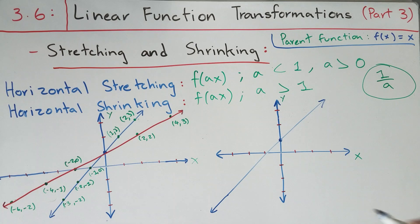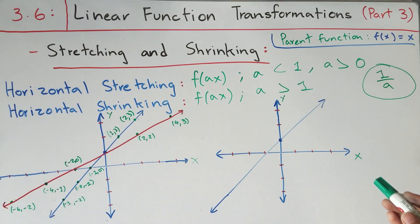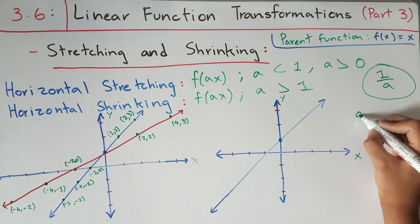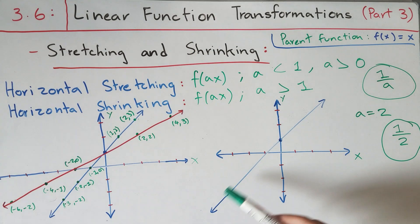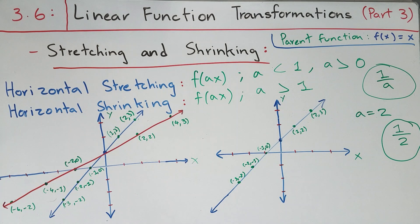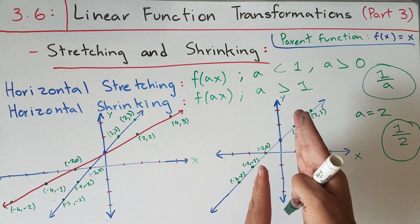Now let's look at horizontal shrinking on a new coordinate plane for the same function f of x equals x plus one. To perform a horizontal shrink, our a in f of ax must be greater than one, which means the function is going to be steeper after the transformation — unlike horizontal stretching where the slope decreased. Let's do a horizontal shrink when a equals positive two, giving us a shrink factor of one over two, or one half.